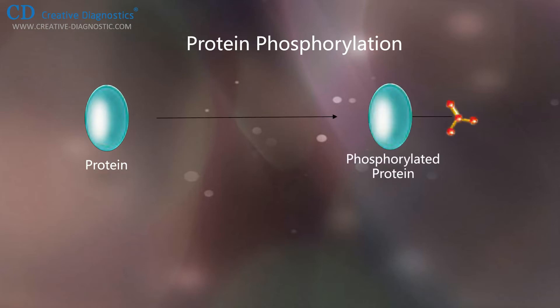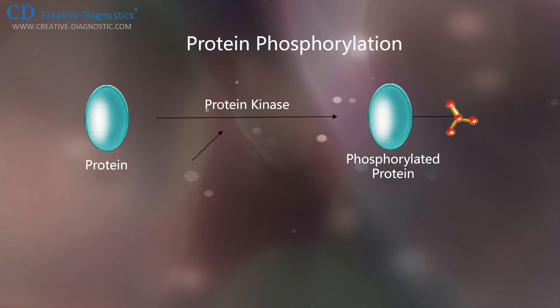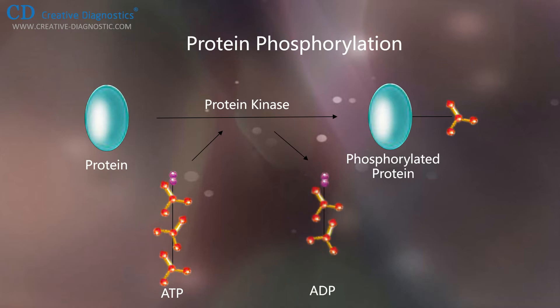Through protein phosphorylation, protein function is regulated in response to extracellular stimuli both inside and outside the cell. Due to a large number of kinases and phosphatases in the genome, the identification of the specific enzymes responsible for a given site in a given protein is immensely challenging. However, because protein kinases and phosphatases recognize local specificity determinants within proteins, it is possible to use small peptides to study the characteristics of site-specific phosphorylation.